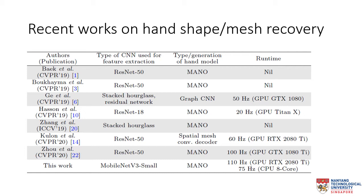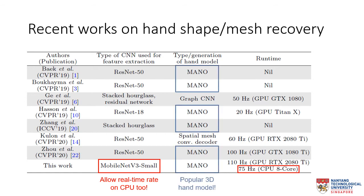In this work, we make use of a lightweight CNN, the MobileNet V3 architecture, which helps to reduce computation time and allow real-time rates on CPU as well. We can also observe from the table that the Mano hand model is commonly used in most of the methods.